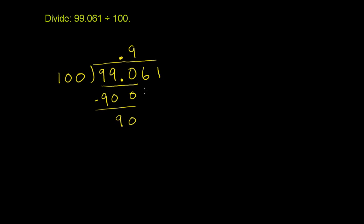Now we can bring down this 6. 100 goes into 906. That's 9 times. 9 times 100 is 900. And then we can subtract. 906 minus 900 is going to be 6.